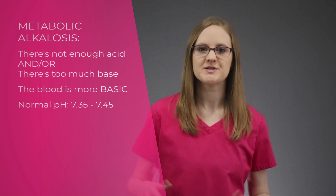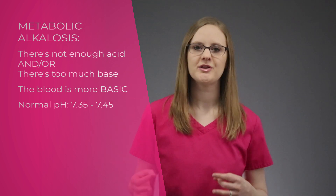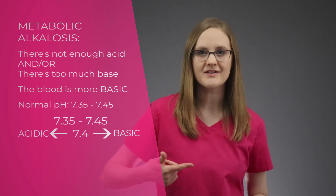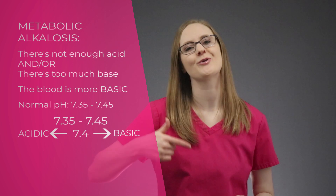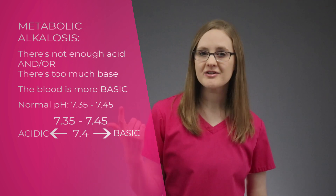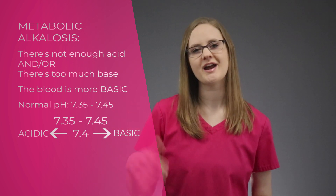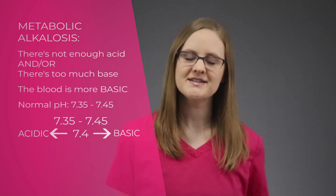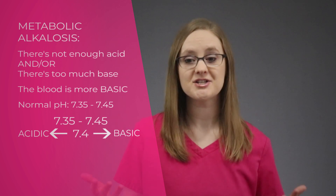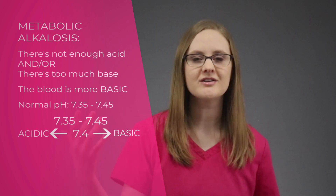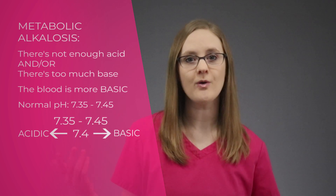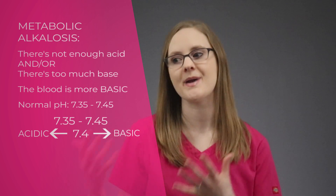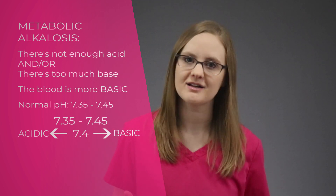A normal pH value is between 7.35 and 7.45. When the pH is less than 7.4, it's more acidic. If the pH is greater than 7.4, it's more basic. And in the case of metabolic alkalosis, the pH is greater than 7.4 because it's alkalosis, meaning it's more basic or alkaline.